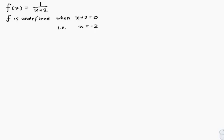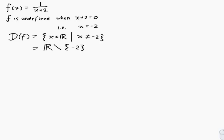So f will be defined for all real numbers except minus 2. We need to write that as a set. The domain of f is equal to the set of x in R, the set of real numbers, such that x is not equal to minus 2. It is also possible to write this as the set of real numbers without the number minus 2.